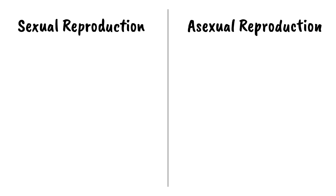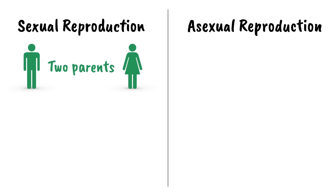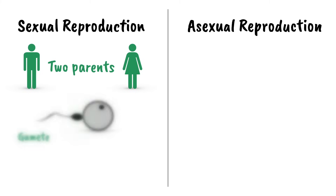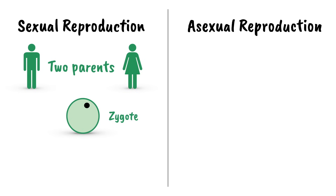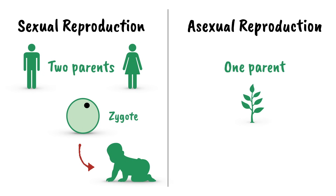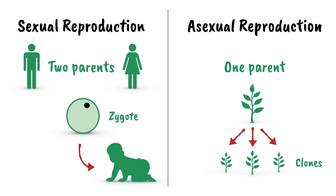As a quick recap, sexual reproduction involves two parents, each one providing a reproductive cell called a gamete, which combines with the other parent's gamete to produce a new, unique cell called a zygote, which can divide and develop into a complete organism. Asexual reproduction, on the other hand, requires only one parent, and all the offspring are genetic clones of that parent.